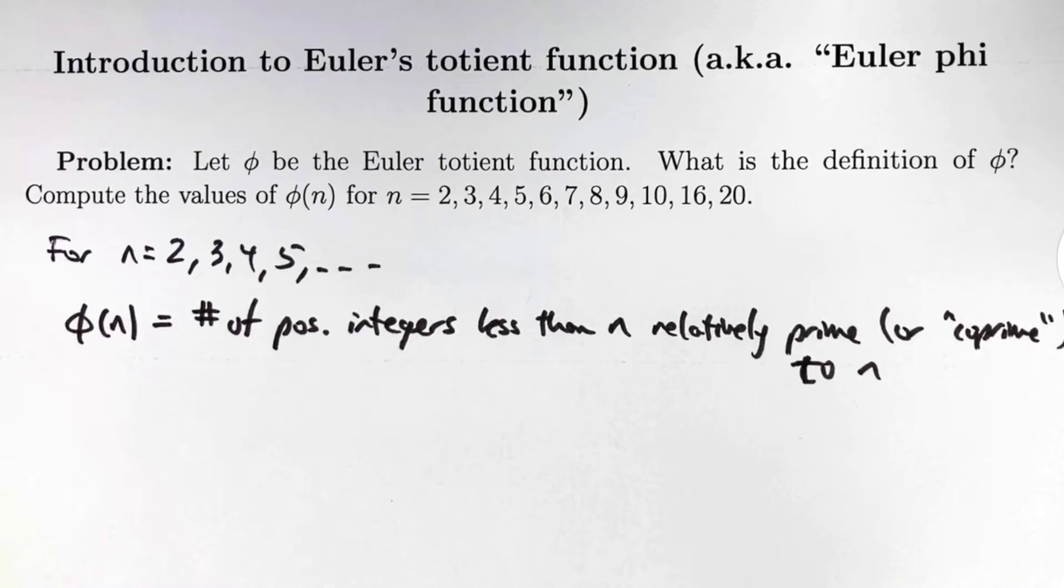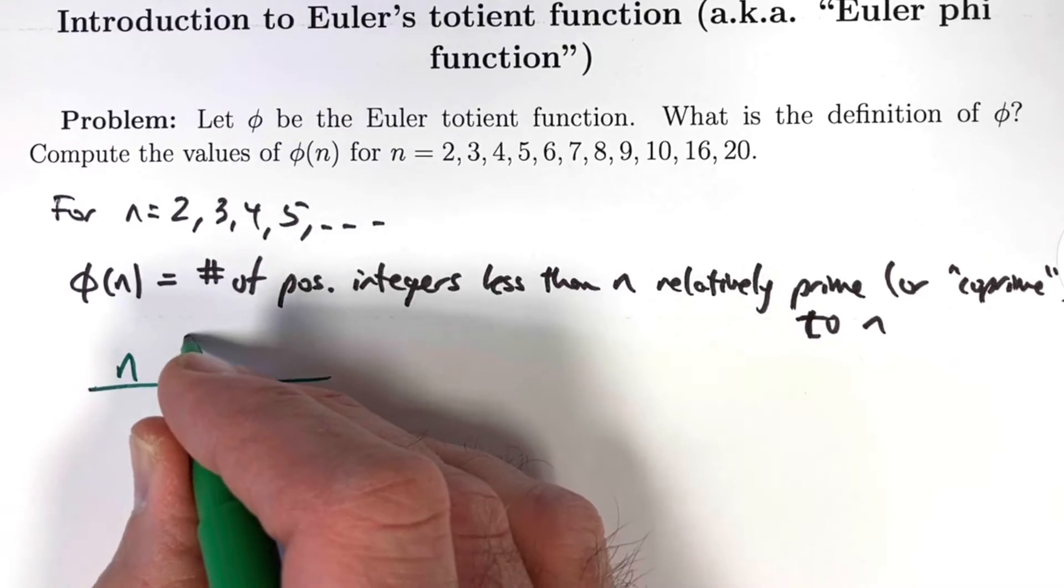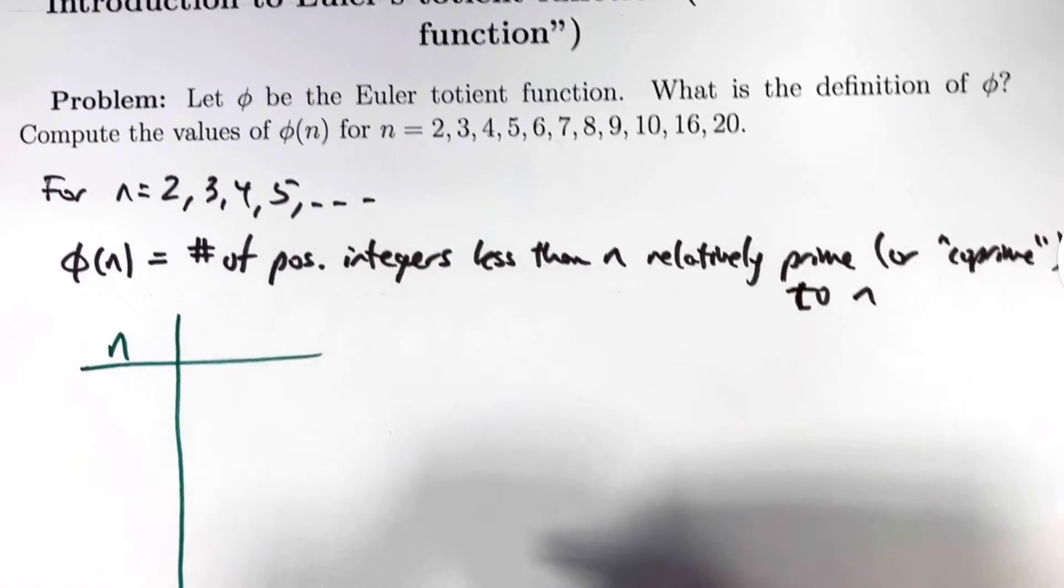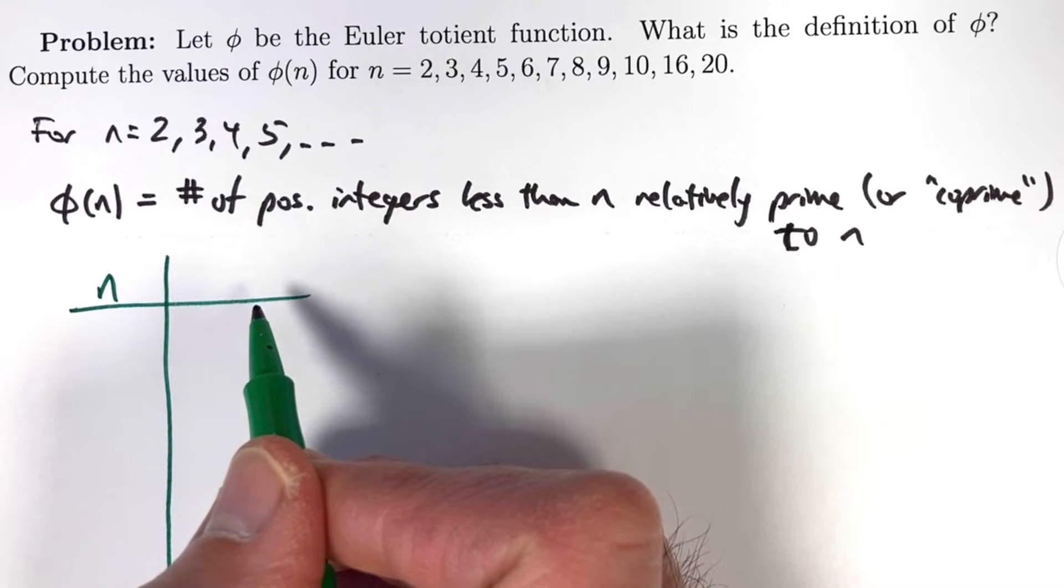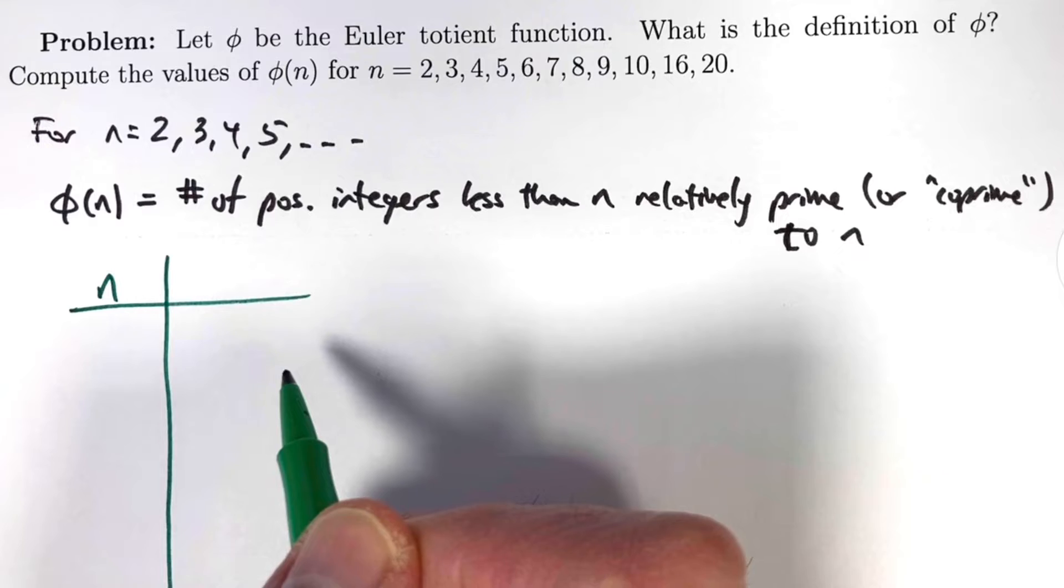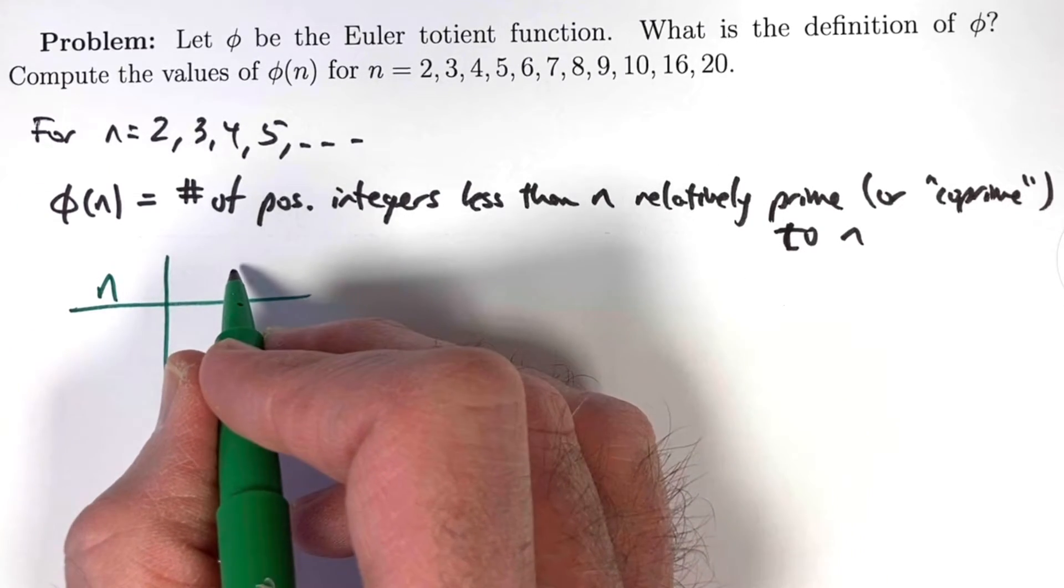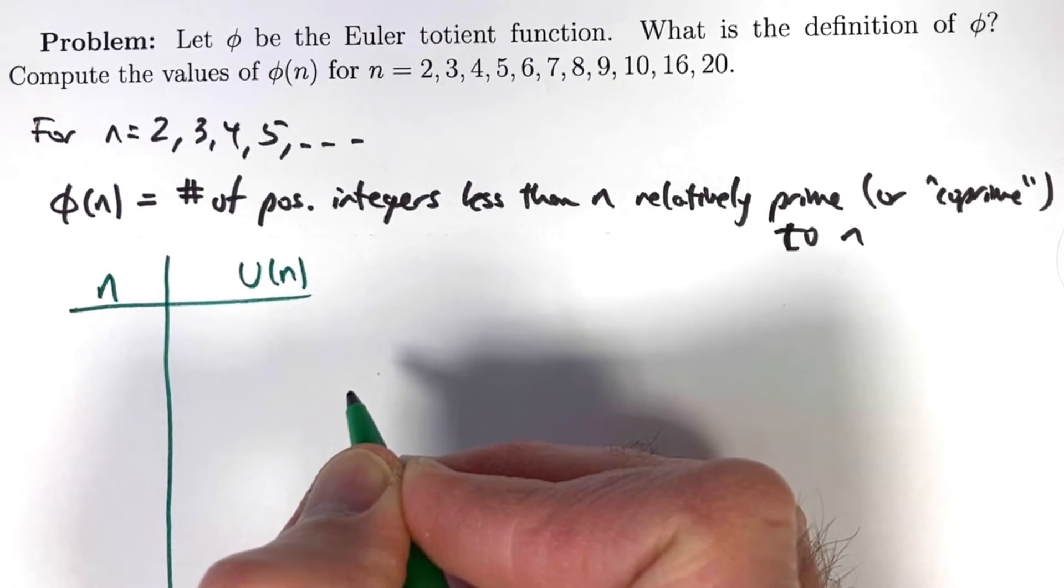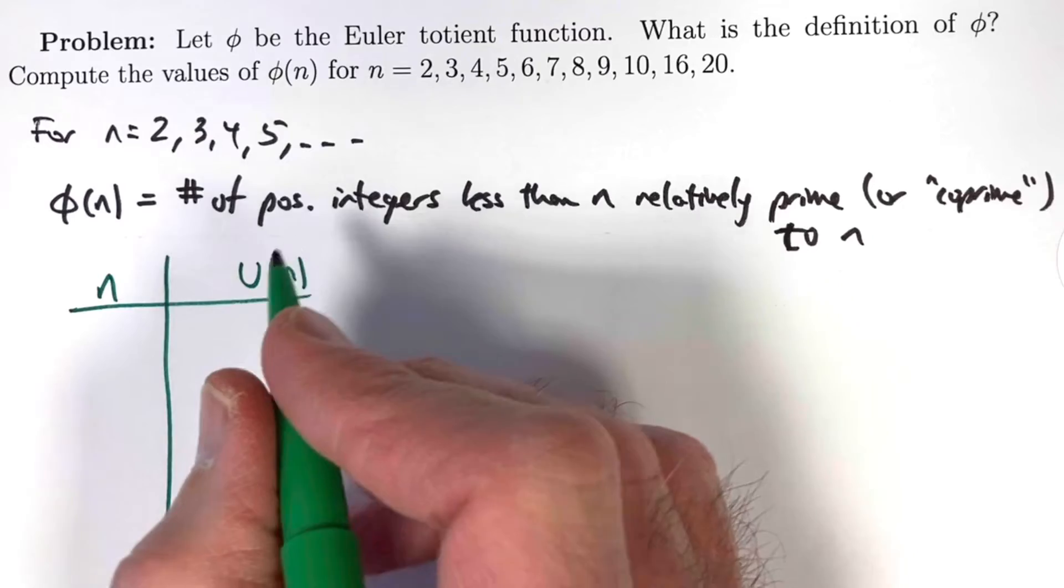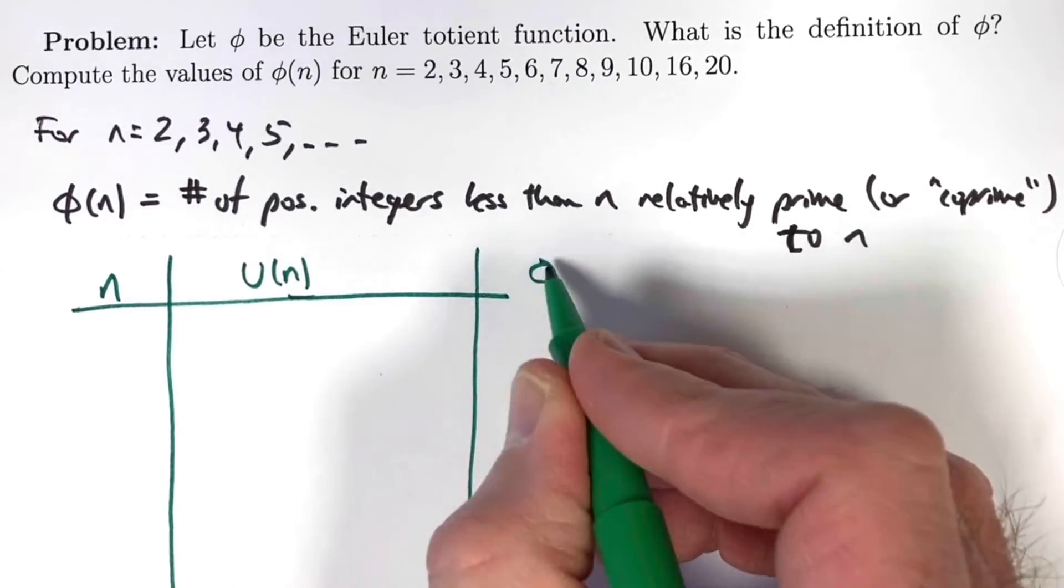To actually do the problem, let's make a table to organize our work. We'll make one column for different values of n, another column where we list the positive integers less than n that are relatively prime to n. The number of elements in that set will be the value of φ(n). I'm going to use group theory notation and call it U(n), which stands for the group of units modulo n. The final column will be the values of φ(n).